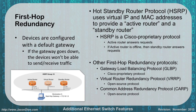The first hot standby routing protocol was HSRP, a Cisco-developed protocol that uses a virtual IP and MAC addresses to provide an active and standby router — the active router answers requests, and if it goes offline, the standby picks up the load. Other first-hop redundancy protocols include GLBP, Gateway Load Balancing Protocol, which is also Cisco proprietary. Open-source options include VRRP, Virtual Router Redundancy Protocol, and CARP, Common Address Redundancy Protocol. Generally though, HSRP is the one you'll hear most often because Cisco held a lot of market share, and it's probably the one that will appear on your exam.